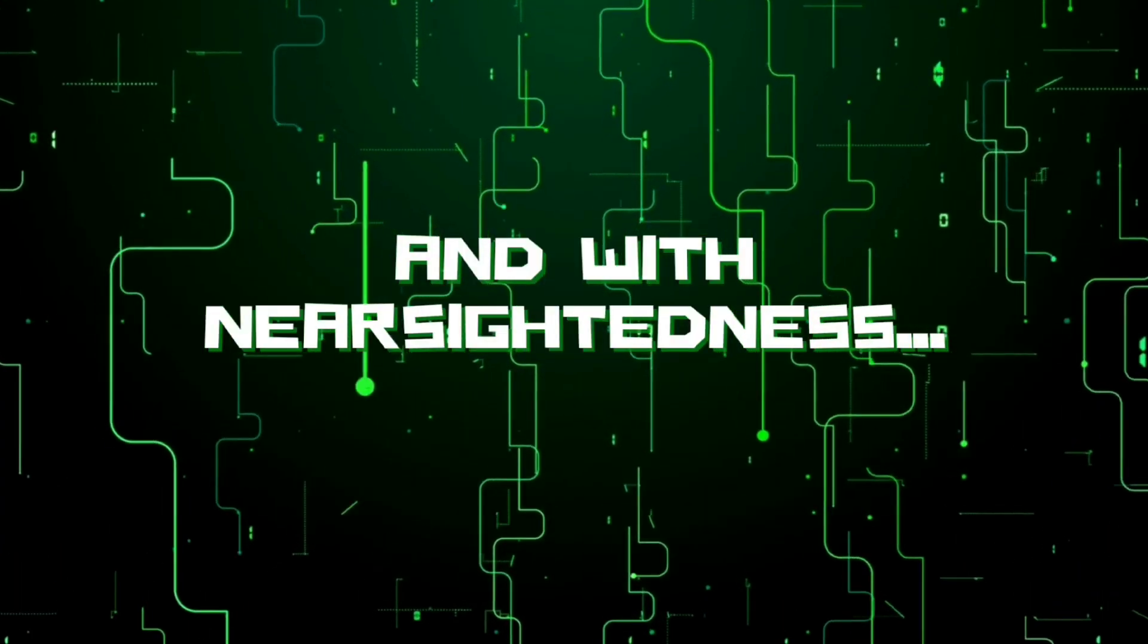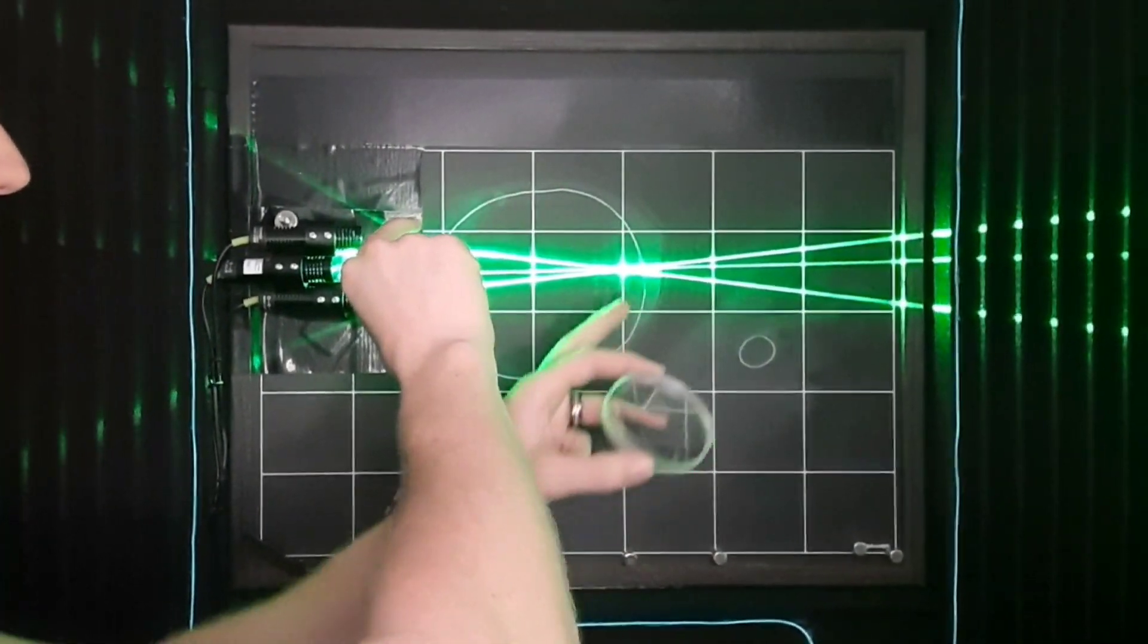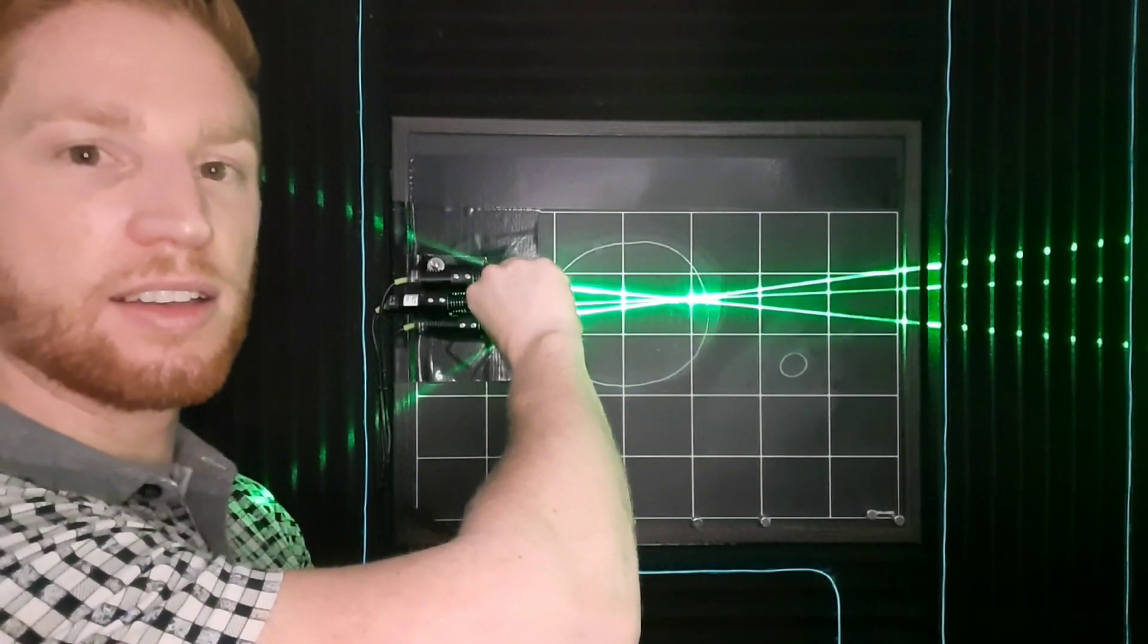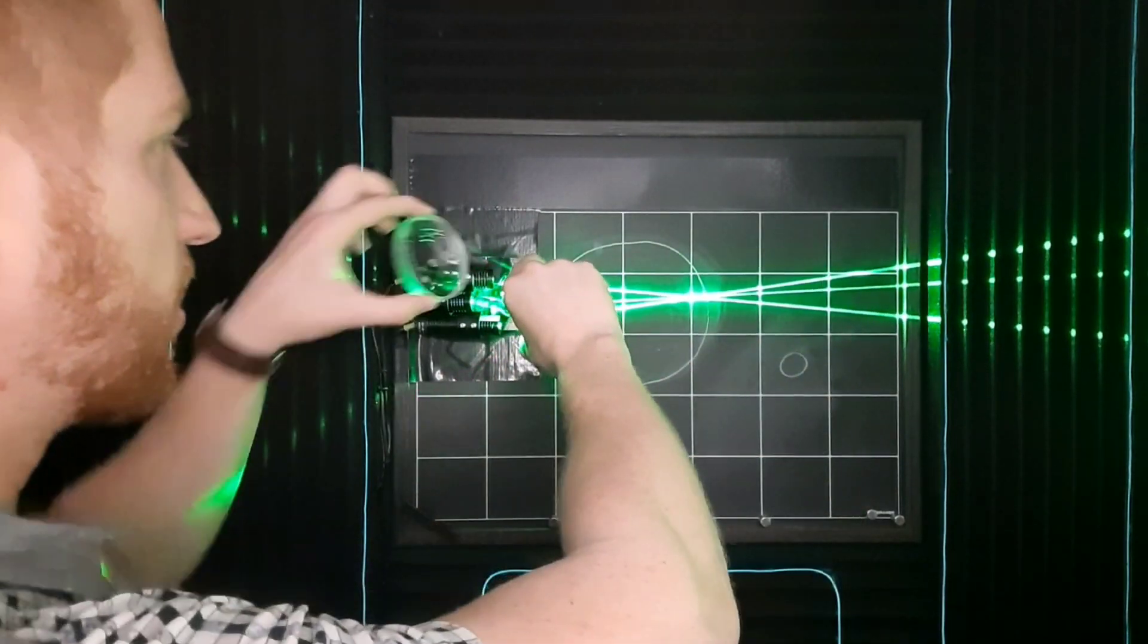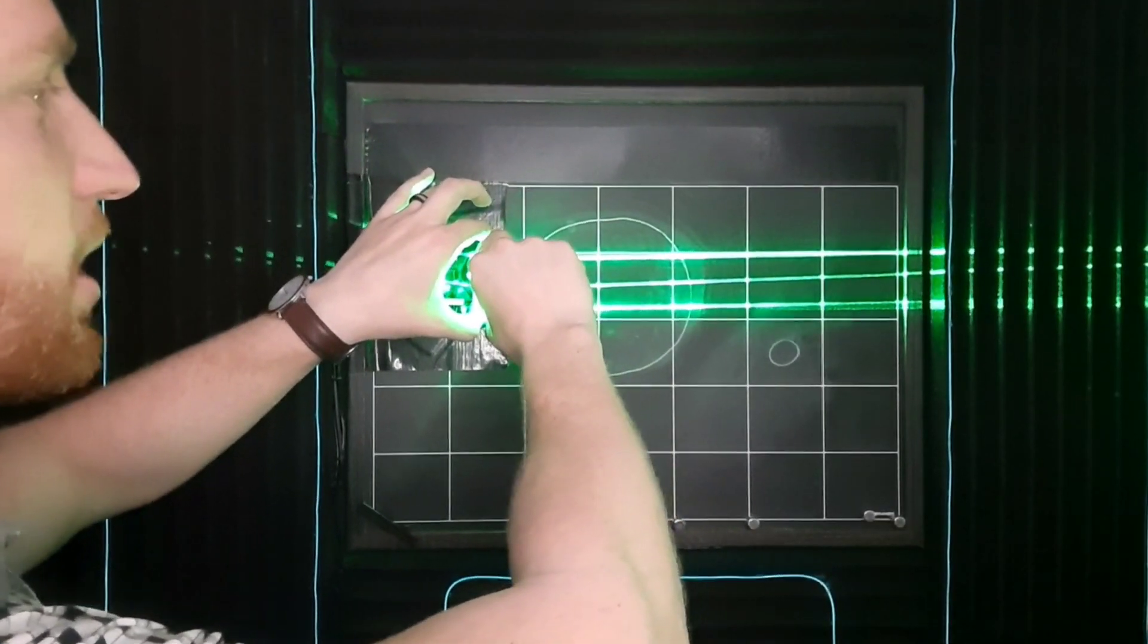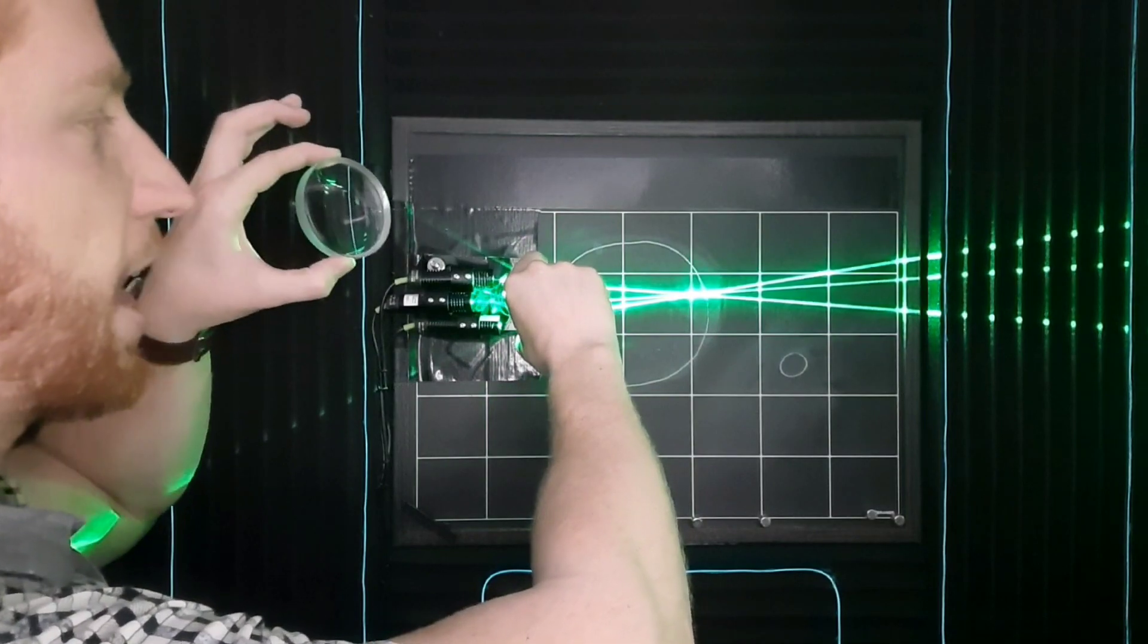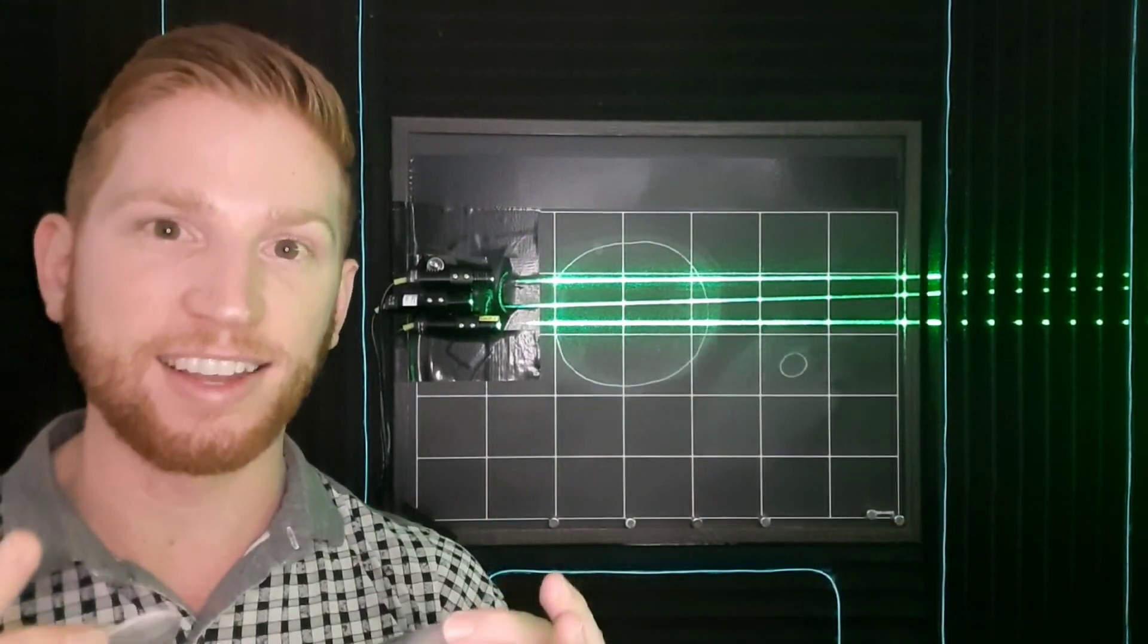And with nearsightedness, the eye is focusing light too strongly. It's focusing sooner than it should. We need to push back the point of focus onto the retina, so we would use a negative lens. Those are the kinds of lenses that spread light out. So putting that in front, this one is way too powerful. It actually completely cancels out the first lens, and we basically have straight lines again. But if I had a weaker negative lens, I could push back that point of focus onto the retina.